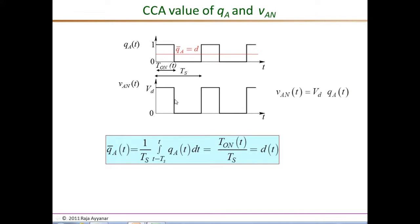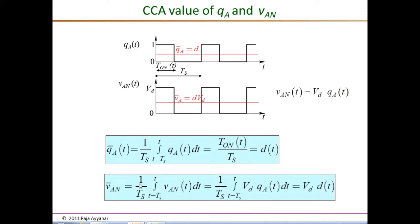Similarly, we derive the CCA for V_AN. Since V_AN has the same wave shape as Q_A scaled by V_D, instantaneously V_AN(t) equals V_D times Q_A(t). Therefore, the CCA of V_AN equals V_D times the CCA of Q_A, which we have shown equals D(t). Thus, V-bar_AN equals V_D times D(t).